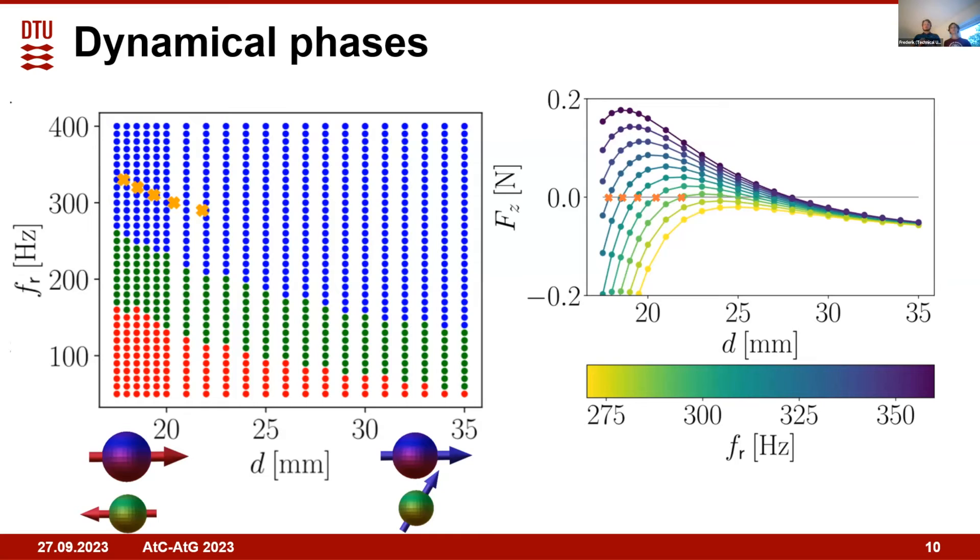In the blue phase we get the configuration that we observe experimentally when they levitate, with the north-north alignment and the floater pointing nearly vertical. In between, in the green phase, the motion is more complicated with the theta angle, the floater polar angle, varying in time.